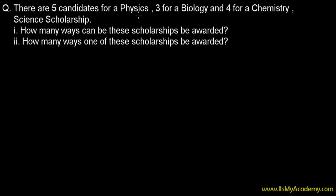The question is: there are five candidates for a physics scholarship, three for a biology scholarship, and four for a chemistry scholarship — meaning there are three scholarships in total. One is given in physics, one in biology, and another in chemistry. We need to find how many ways all three scholarships can be awarded, and also how many ways just one of these scholarships can be awarded.